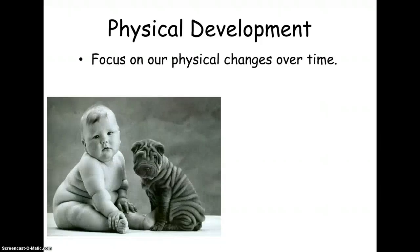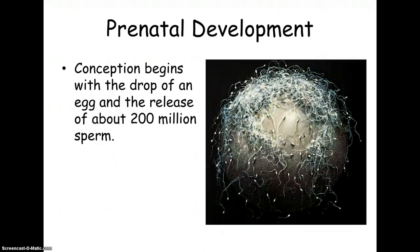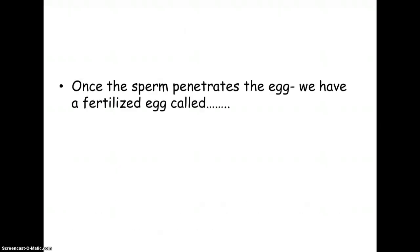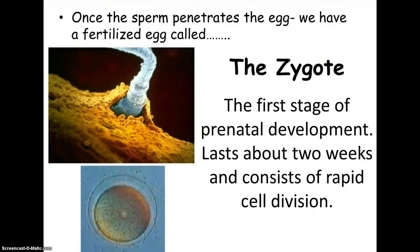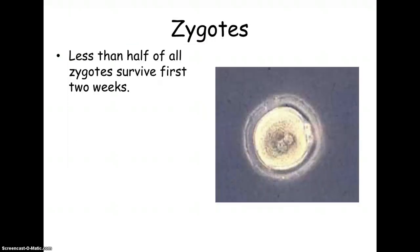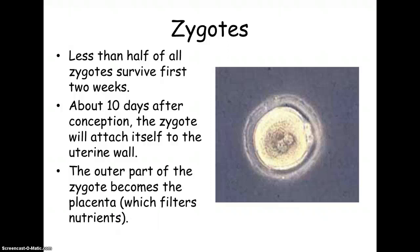Physical development covers all the physical stuff — how did our physical body change over time? Let's start with prenatal development, the very beginning. Conception begins with the release of an egg and about 200 million sperm. The zygote is the first cells of conception. In the first two weeks, less than half of all zygotes survive. After about 10 days, the zygote attaches to the uterine wall, and the outer part becomes the placenta, which filters nutrients. As a zygote, your cells begin to rapidly divide and your heart begins to beat.